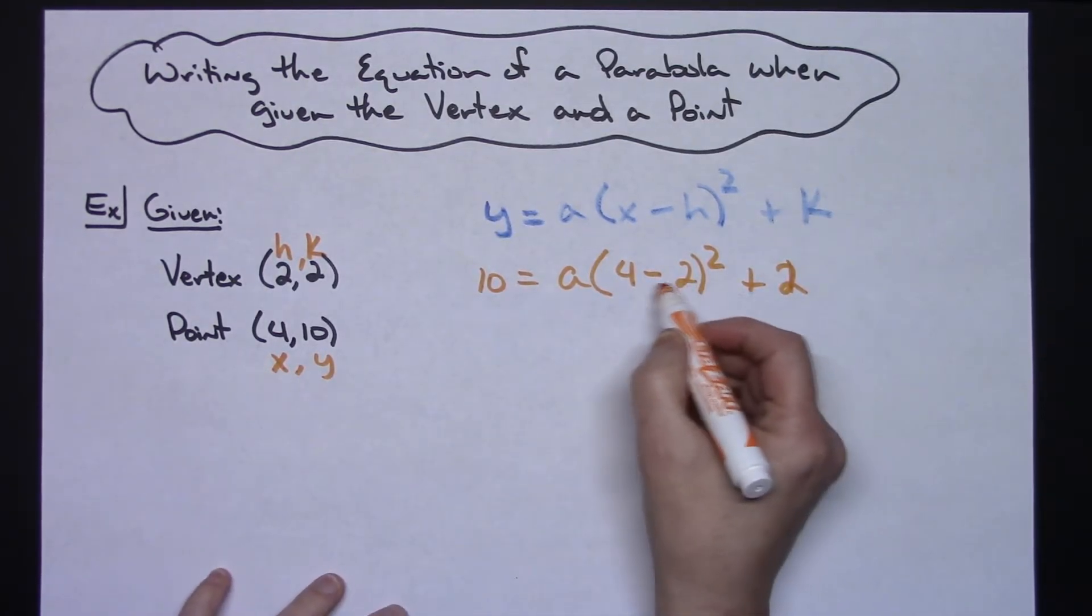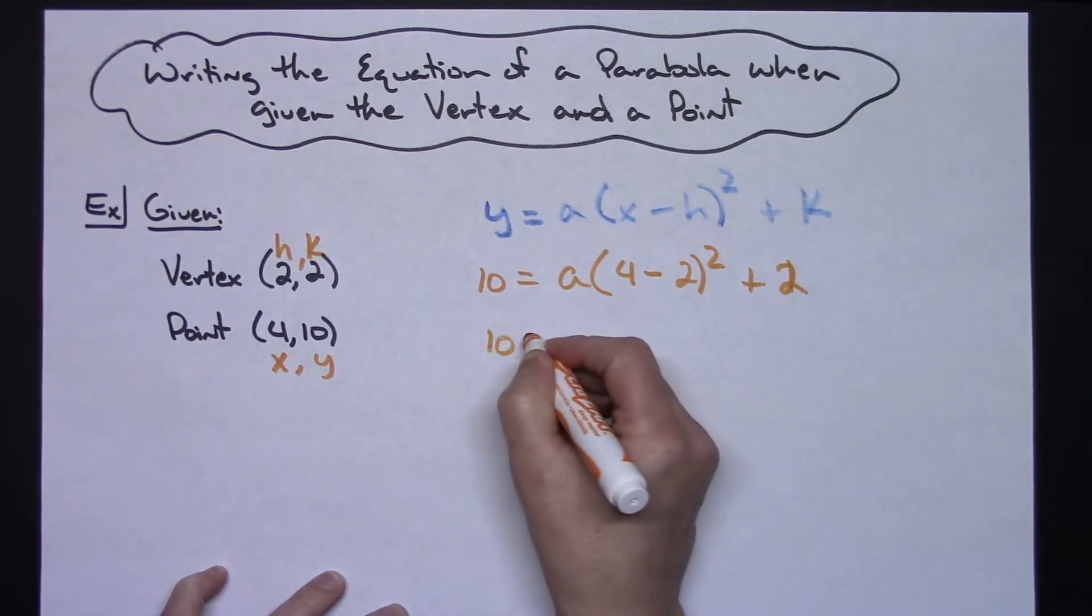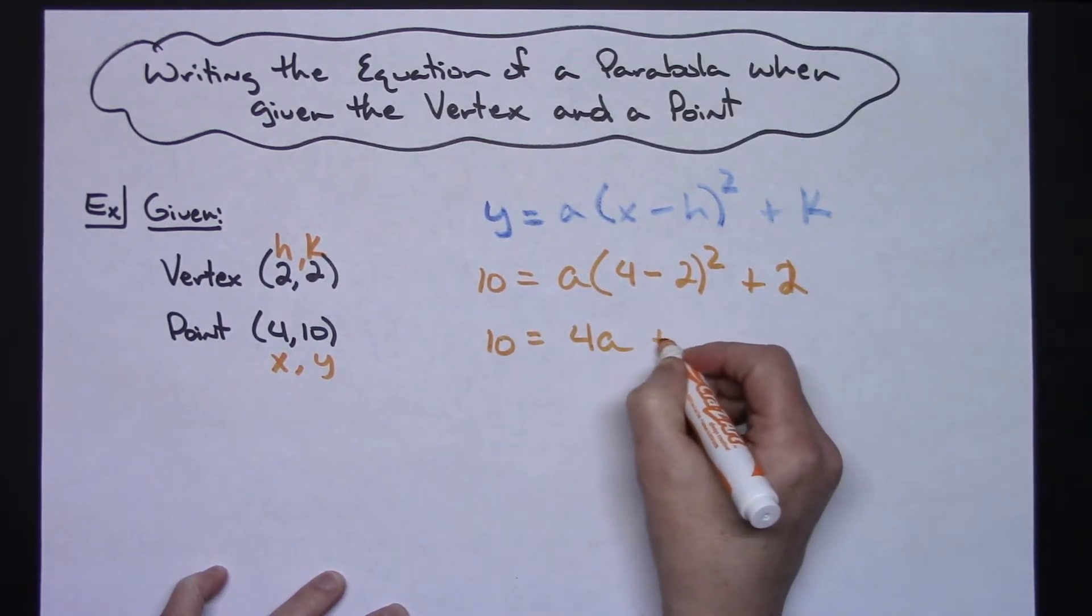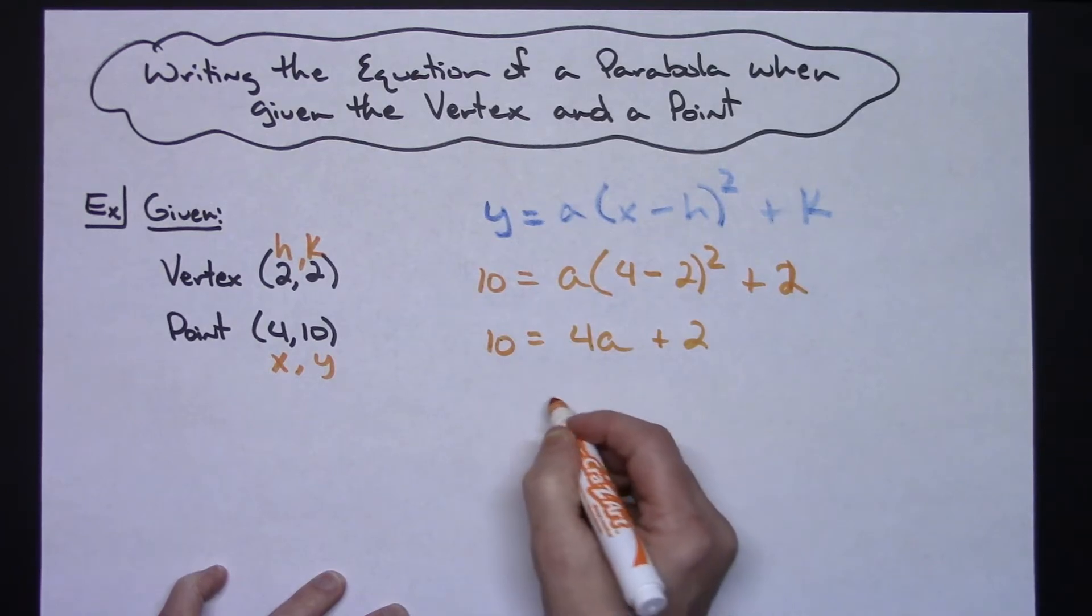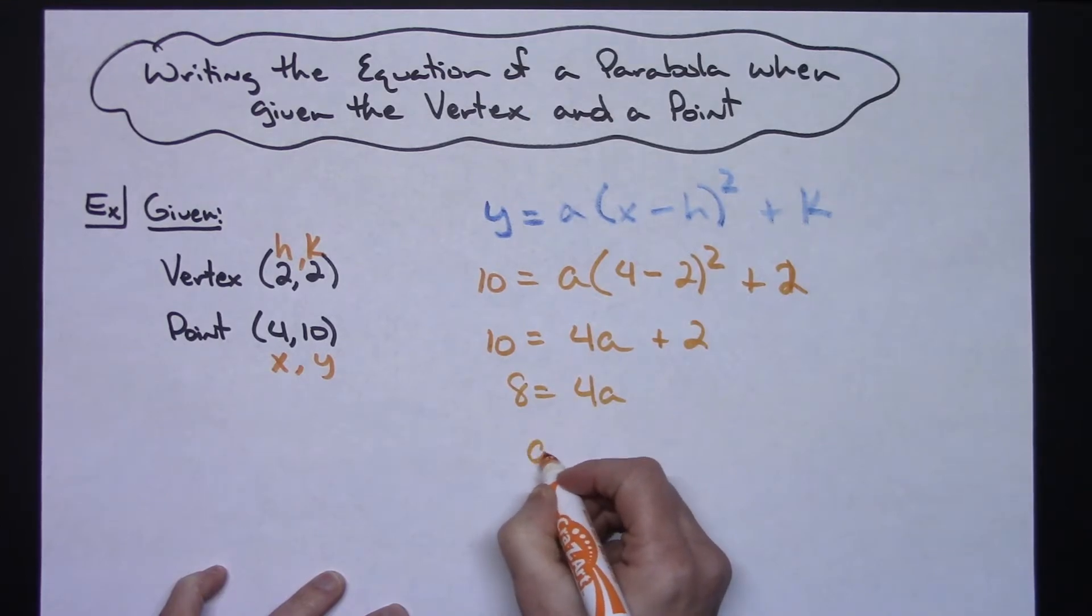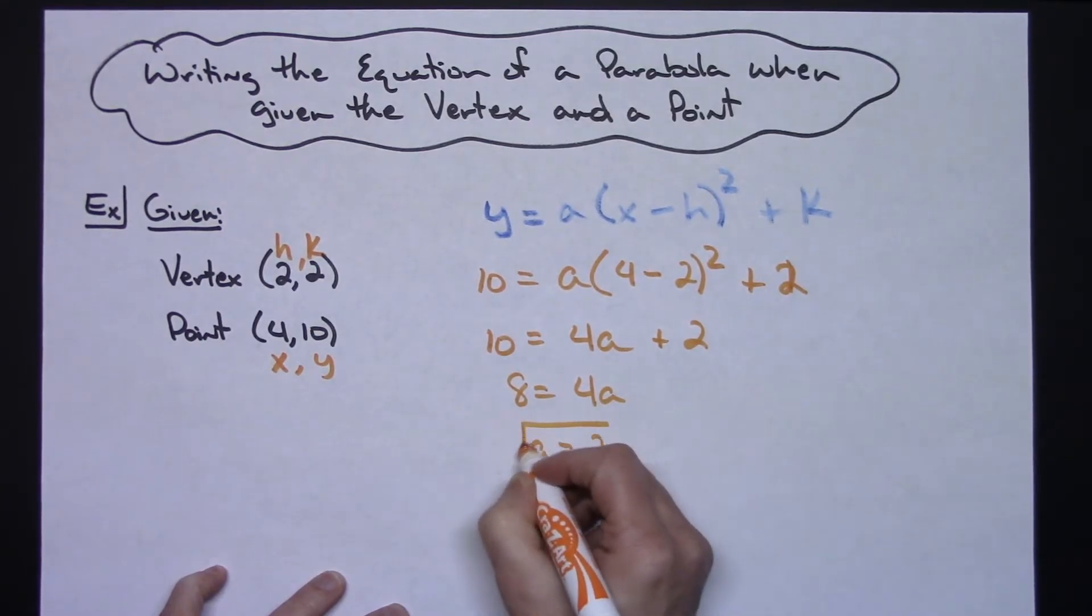If I do this, 4 minus 2 is 2, 2 squared is 4, so I've got 10 equals 4a plus 2. Subtract 2 from both sides, 8 equals 4a, divide both sides by 4, so my a is going to equal 2.